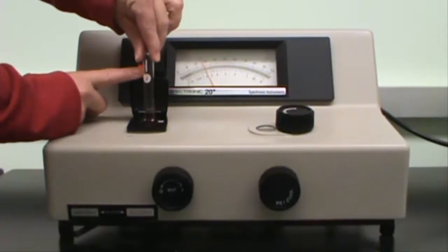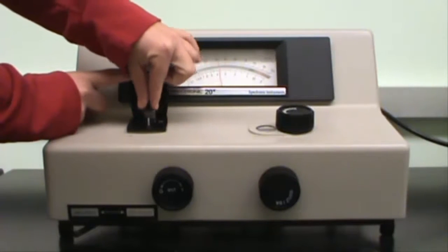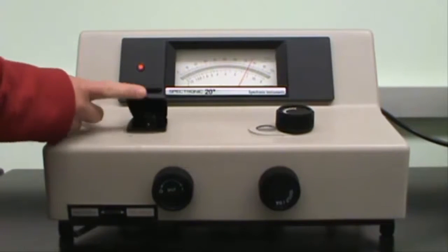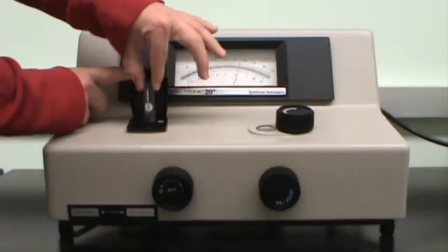Put your sample in the SPEC20 with the white and black lines lined up and close the lid. Record the absorbance reading. You must repeat the blank adjustment before every sample.